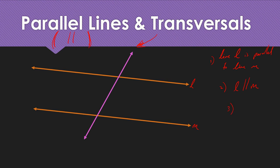A third way they show lines are parallel is using a little arrow or a solid triangle — a solid arrow — on the lines themselves. So not at the tip of the line, but an extra mark somewhere on the line. That mark shows you that l and m are parallel. Anytime we see that, we should automatically know they are parallel. The solid triangle or solid arrow also shows that the two lines are parallel.